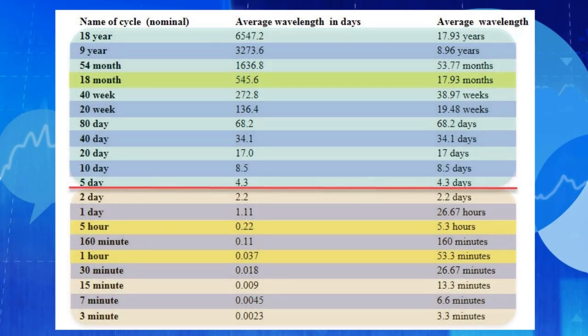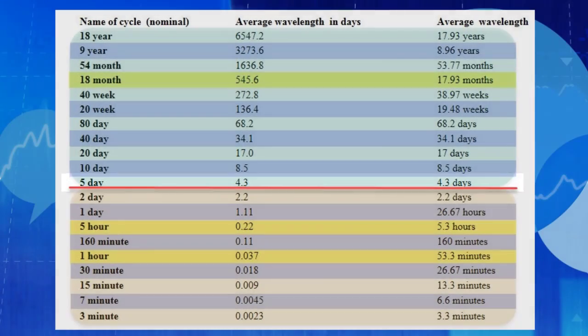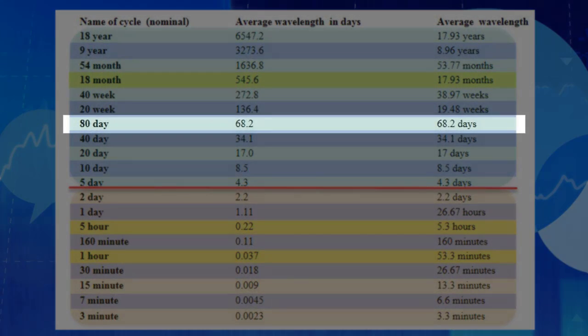The shortest cycle that he identified was a five-day cycle with an average wavelength of 4.3 days. You will notice that the 80-day cycle, for instance, has an average wavelength of 68.2 days.